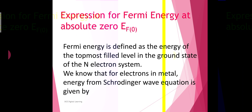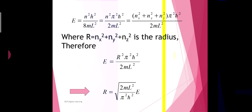For electrons in a metal, energy according to Schrödinger's wave equation is given by E = n²h² / 8mL². In terms of ħ (h-cross), it is written as n²π²ħ² / 2mL², where n² = nx² + ny² + nz².